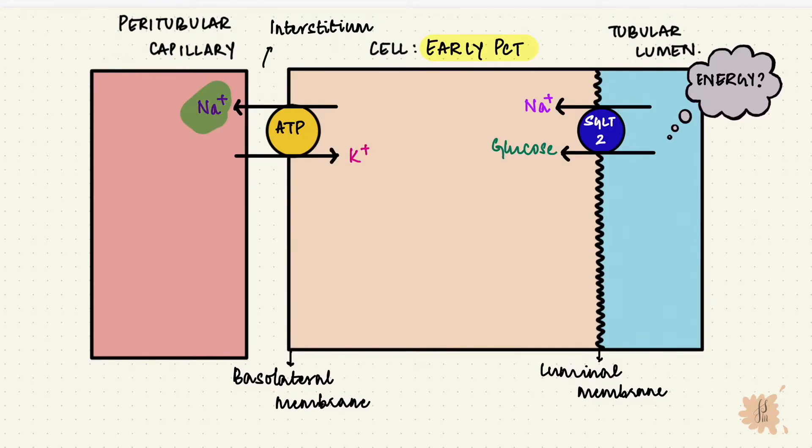So since sodium leaves the cell, it creates a concentration gradient. The low concentration in the cell pulls sodium from the other side, and that creates an energy which brings substances like glucose along with it. So this is a secondary active transport, because the energy is coming from another primary active transport.